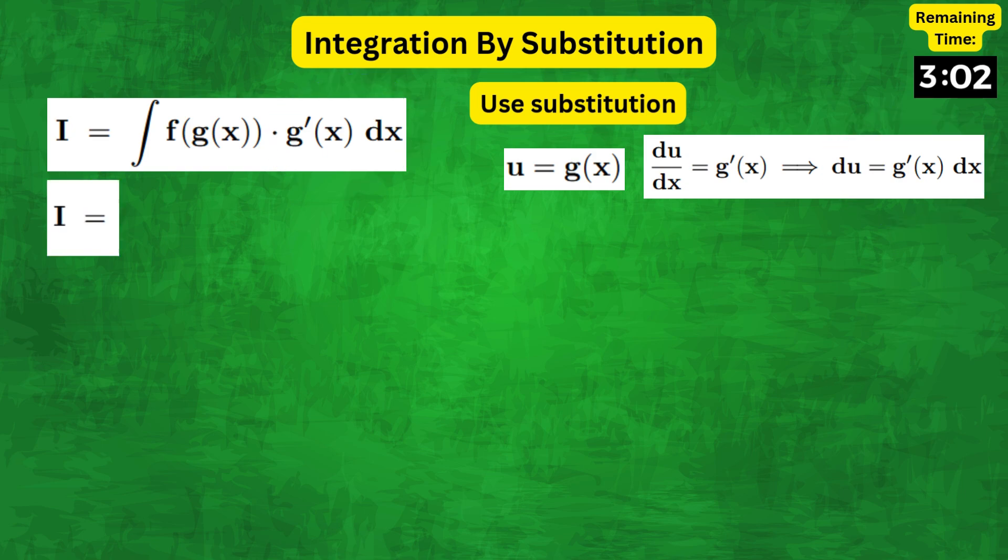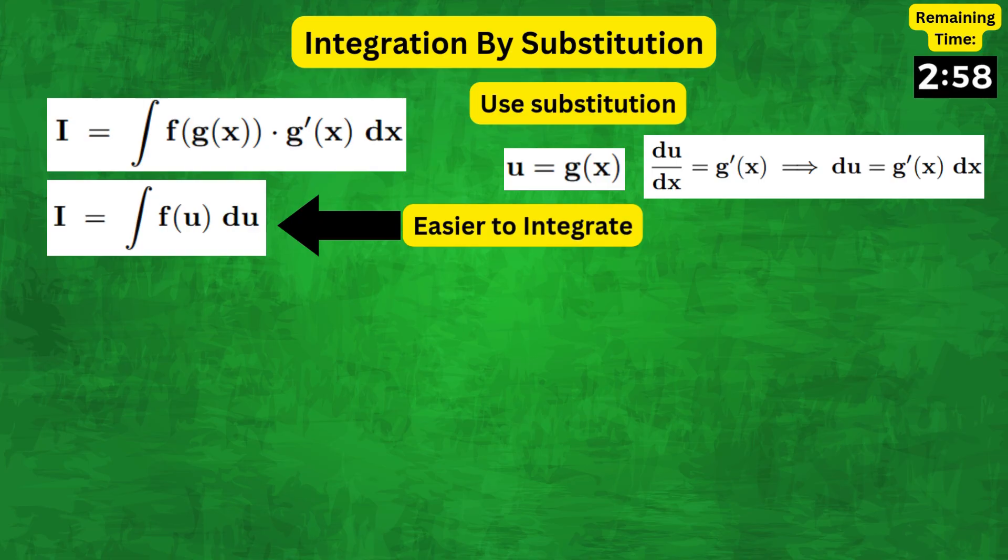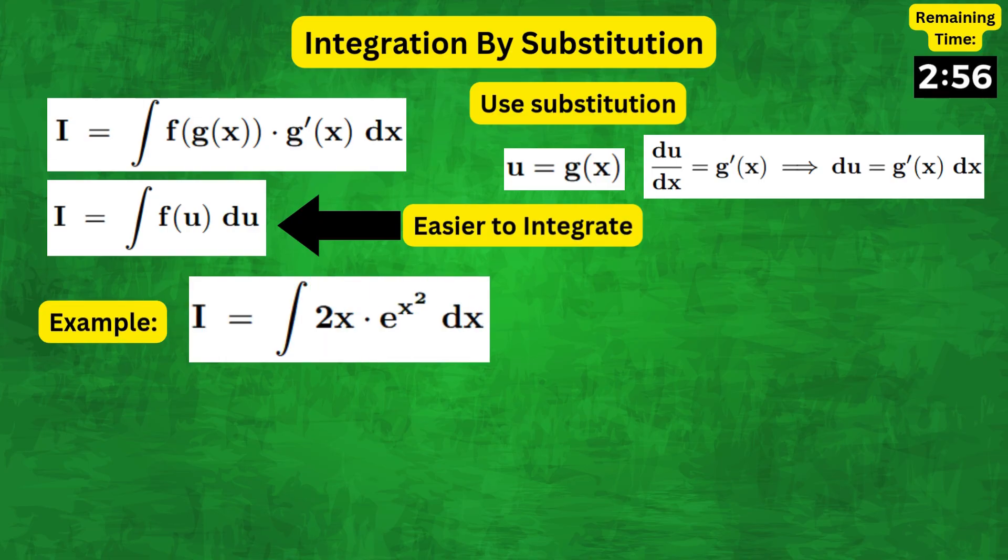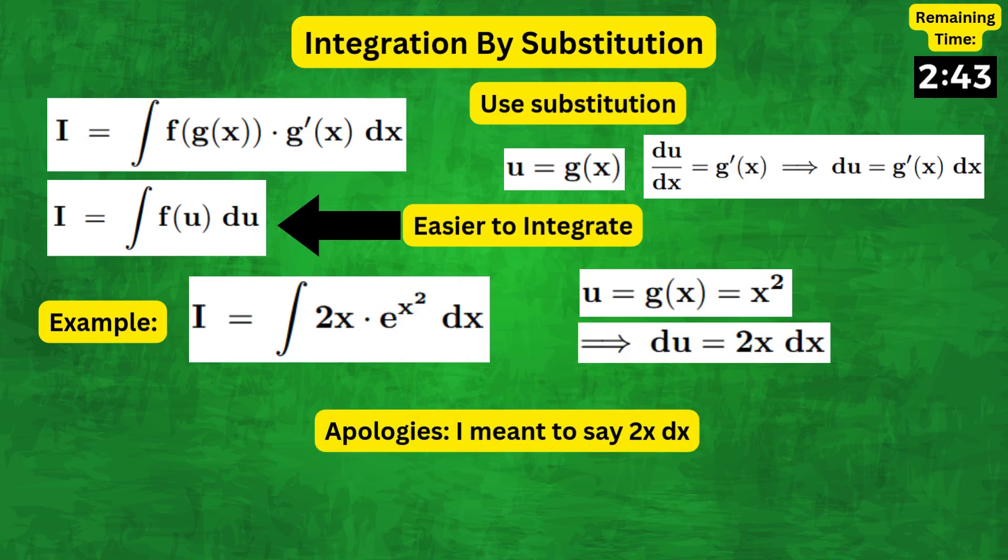Plugging this into the original integral, we get f(u) du, which can easily be integrated. To illustrate this, consider the example: I equals the integral of 2x times e to the x squared dx. Comparing this to the above form, we set u equals g(x), which is equal to x squared, du equals 2x dx.